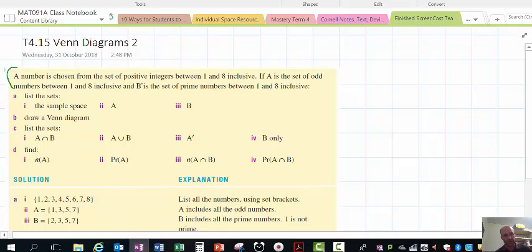A number is chosen from a set of positive integers between 1 and 8 inclusive. Integers being whole numbers. If set A is the set of odd numbers and B is the set of prime numbers, we have a few things to do.